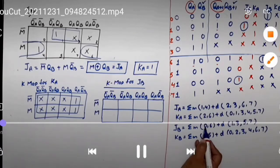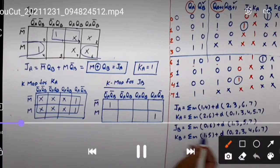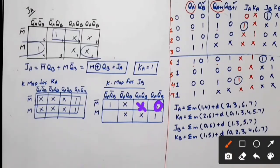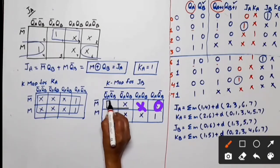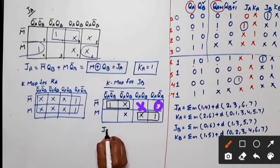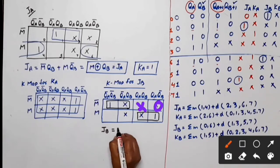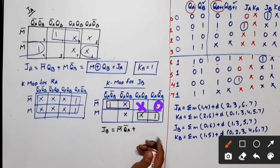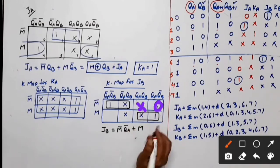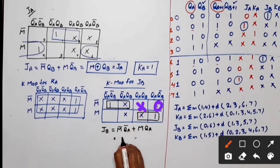For JB, mean terms are 0 and 6, don't cares are 1, 3, 5, 7. Two pairs are possible. From the first pair, the row from M bar — what is common from these two columns — is QA bar. From the second pair, the row from M — what is common — is QA. So this expression is M XNOR QA. You can either add different gates (AND-AND-OR) or directly use an XNOR gate.